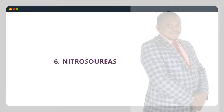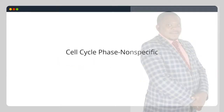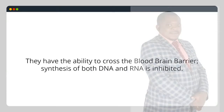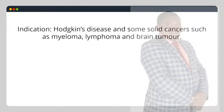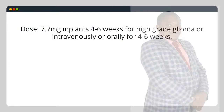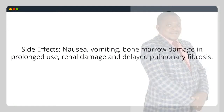6. Nitrosoureas: cell cycle phase non-specific. They have the ability to cross the blood-brain barrier; synthesis of both DNA and RNA is inhibited. Carmustine — indication: Hodgkin's disease and some solid cancers such as myeloma, lymphoma and brain tumor. Dose: 7.7 mg implants for 4–6 weeks for high-grade glioma, or intravenously or orally for 4–6 weeks. Side effects: nausea, vomiting, bone marrow damage with prolonged use, renal damage and delayed pulmonary fibrosis.